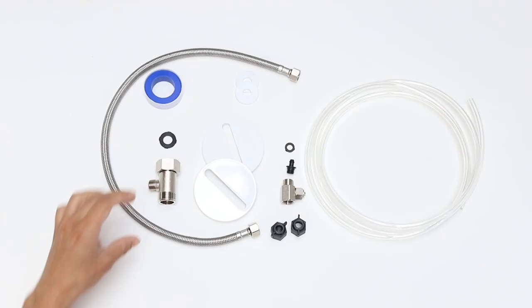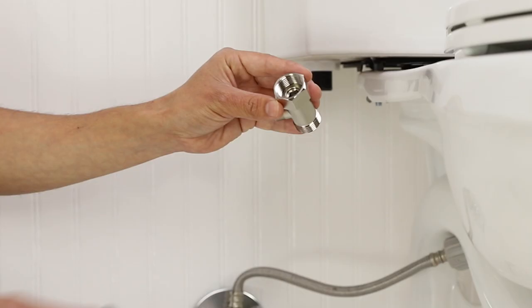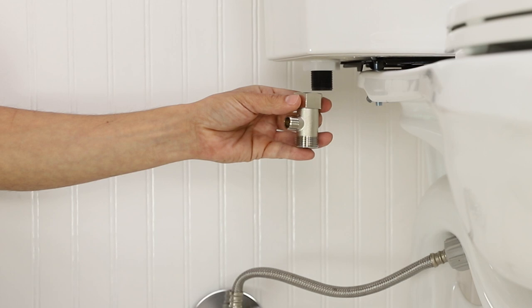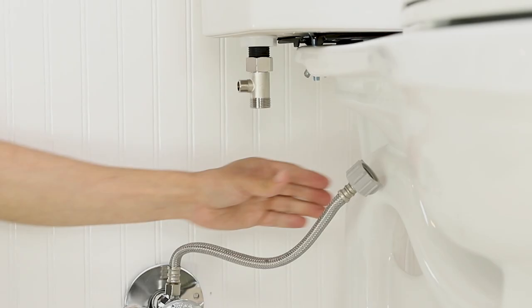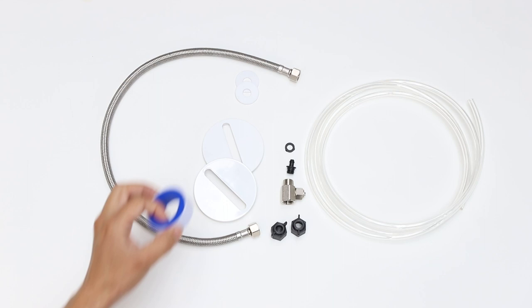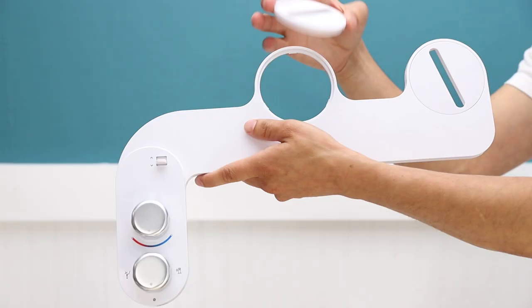Remove your existing toilet seat and thoroughly clean your toilet. Insert the black rubber washer into the provided T-valve and connect the T-valve to the fill valve under the toilet tank. Do not over tighten. Reconnect the flexible supply line to the bottom of the T-valve. It is recommended to apply plumber's tape.